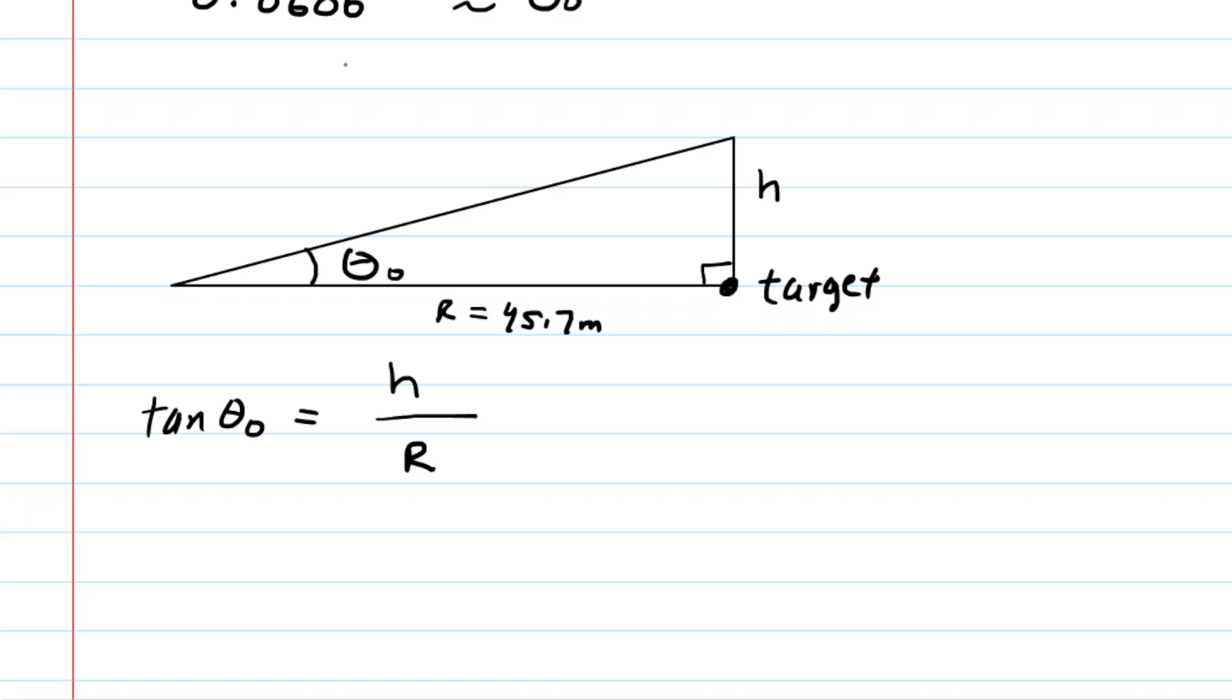So we can start to plug in here. Actually, why don't we just solve for height? We could multiply both sides of this by r, and that'll isolate the height because these r's will cancel. So you can see that the height is simply the range times the tangent of that launch angle.